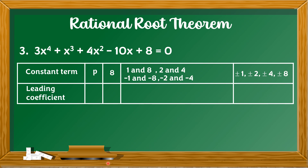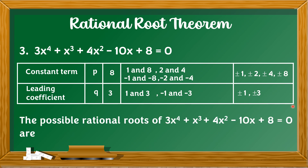For the leading coefficient — value of Q — it is the numerical coefficient of x raised to the 4th, which is 3. The factors of 3 are 1 and 3, negative 1 and negative 3, written as positive/negative 1 and positive/negative 3. After finding the factors of P and Q, we determine P over Q to find the possible rational roots.